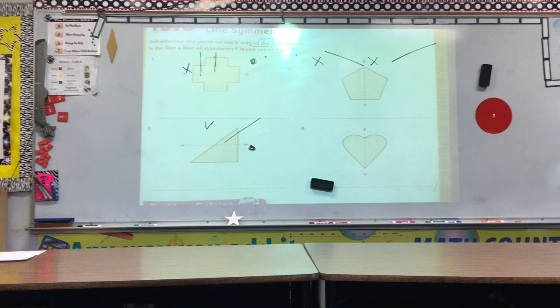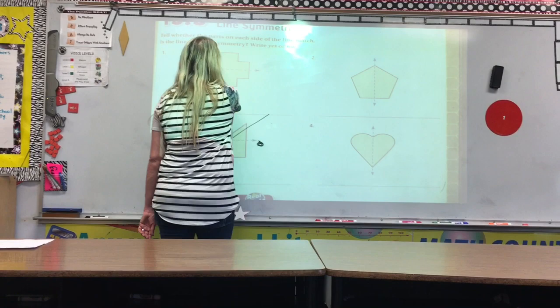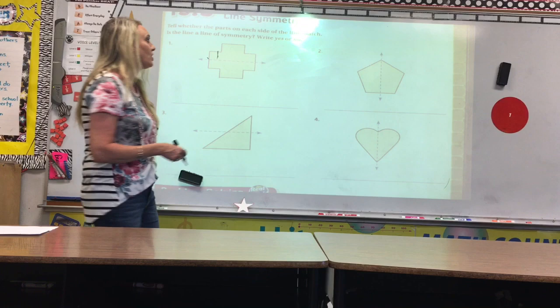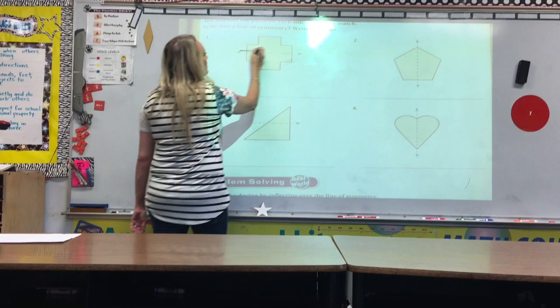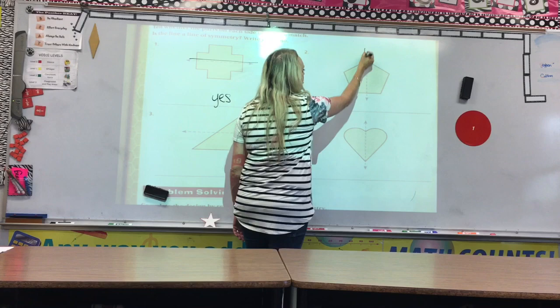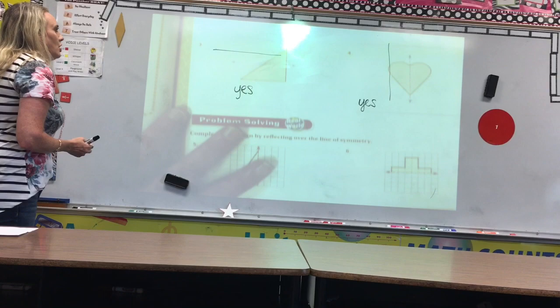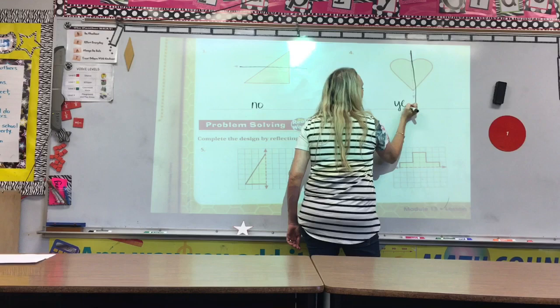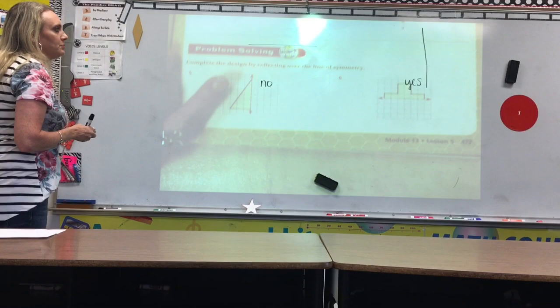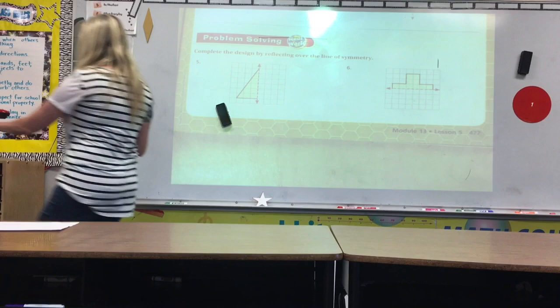Now, on this side, it gives you lots of practice. I also would like you to pause right here so that you can try this on your own before I get into telling you the answers. So, try to push pause, and then I'm going to continue. It says, is the line a line of symmetry, yes or no? This, if I fold it, is a yes. Number 2 is a yes. Number 3, the way they cut the triangle right there is a no, but the heart is a yes. Number 5 and 6 are another complete the drawings. I'm going to let you do those on your own. Let's look quickly at the back.